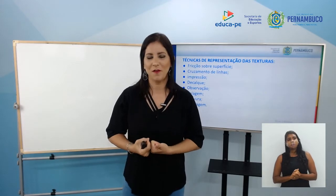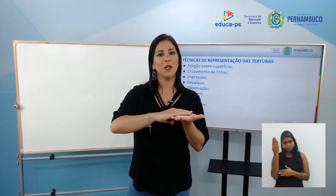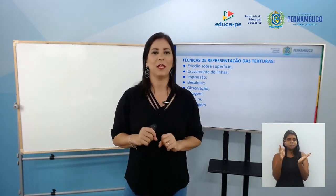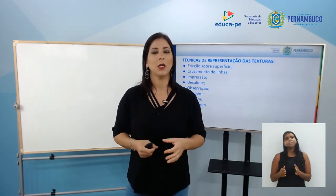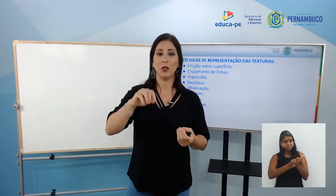Temos a fricção sobre superfície: lembram que citei o exemplo de você colocar uma folha de árvore, colocar uma folha de papel sobre ela e riscar com giz de cera? A folha da árvore vai ficar completamente decalcada na folha de papel, porque a gente fez uma fricção sobre a superfície, transpondo o desenho da folha original para o papel. Temos também o cruzamento de linhas, quando no desenho os artistas não fazem apenas o contorno, mas vão preenchendo e dando volume, fazendo um jogo de luz e sombra através de linhas que se cruzam, trazendo sugestão de textura e volume à obra.